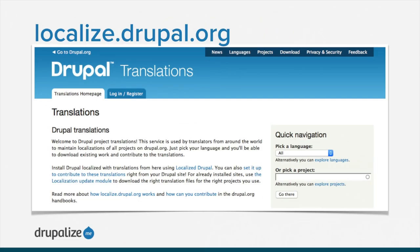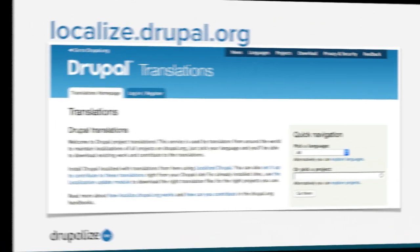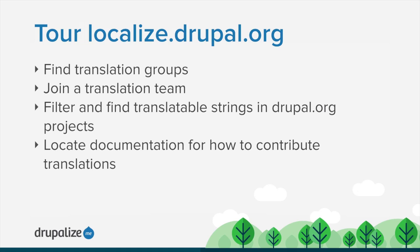Localize.Drupal.org is a central service where contributors can maintain localizations of all projects on Drupal.org. Let's take a tour of the site and discover how to find and join a translation group, filter translatable strings in Drupal.org projects, suggest a translation, and locate documentation for how to contribute to translations of Drupal.org projects.